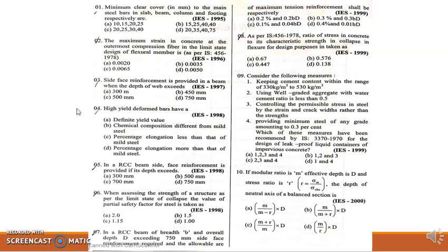First question: Minimum clear cover to the main steel bars in slab, beam, column and footing respectively are? According to IS 456-2000, minimum clear cover for slab is 20mm, for column is 40mm, beam is 25mm, and footing is 50mm. The answer matching these correct values is not here, so the answer is none of these.